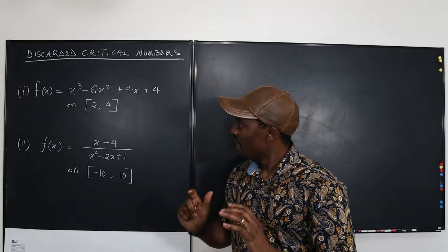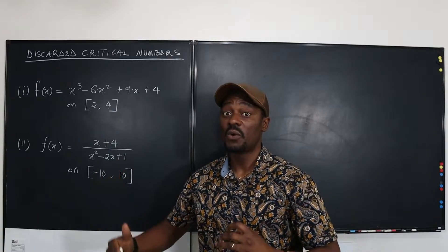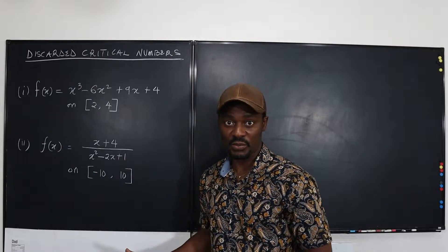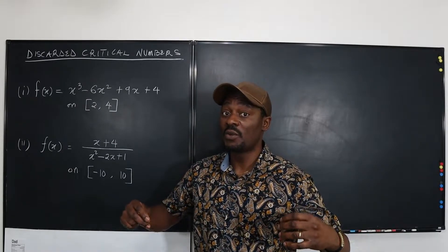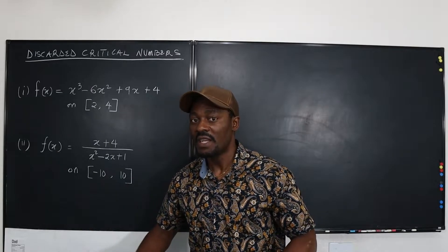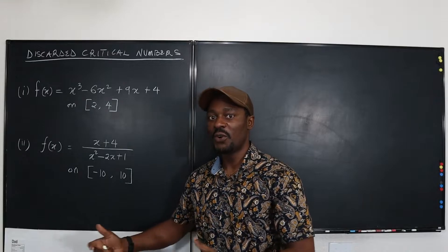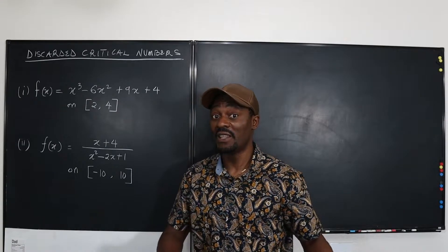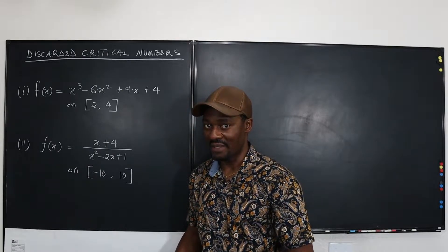Whenever you're asked to find the maxima or minima, you know you're going to have to find the critical numbers, which you'll plug back in or use on a sign chart to decide where you have your maximum or minimum. Usually after you take the derivative and equate to zero, you get your critical numbers — but you cannot just take the numbers you got and use them. Two conditions must be met.